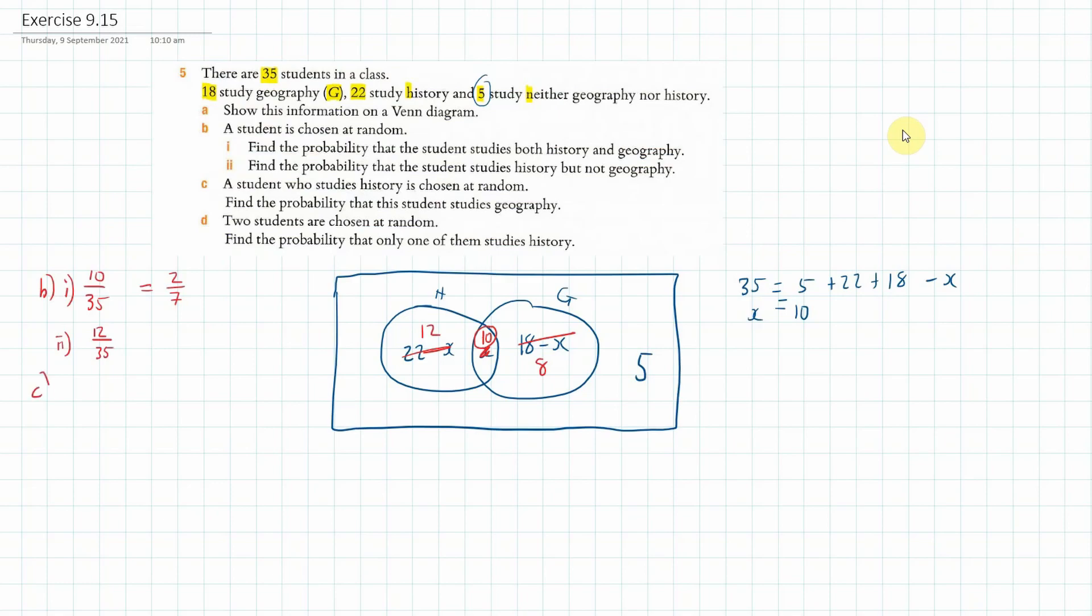Okay, now C. The student who studies History is chosen at random. So now we're dealing with anyone in the History circle. So there's 22. They're chosen at random. Find the probability that this student studies Geography.